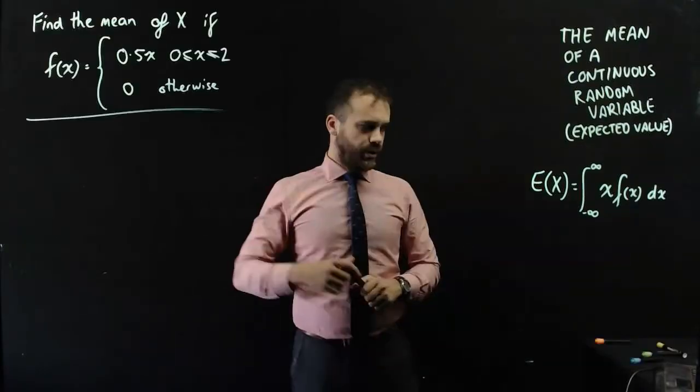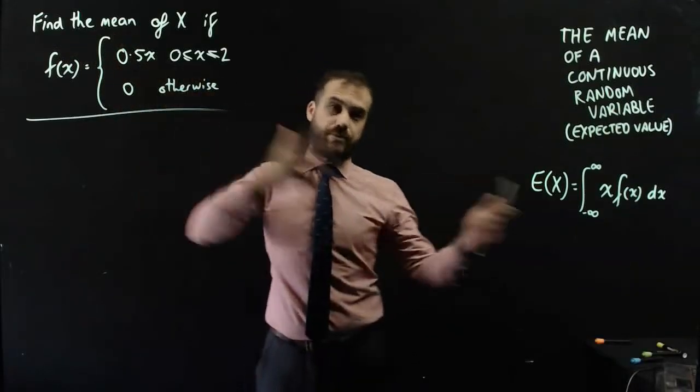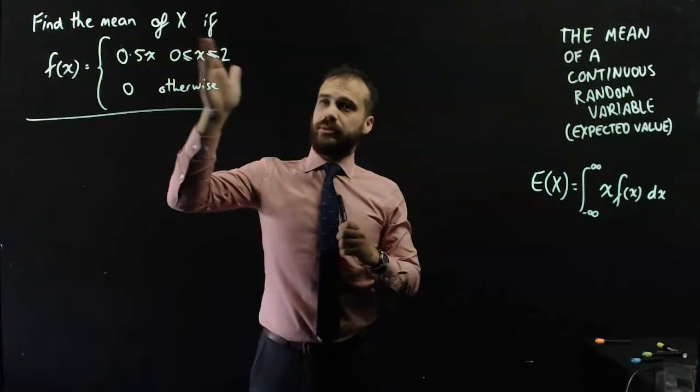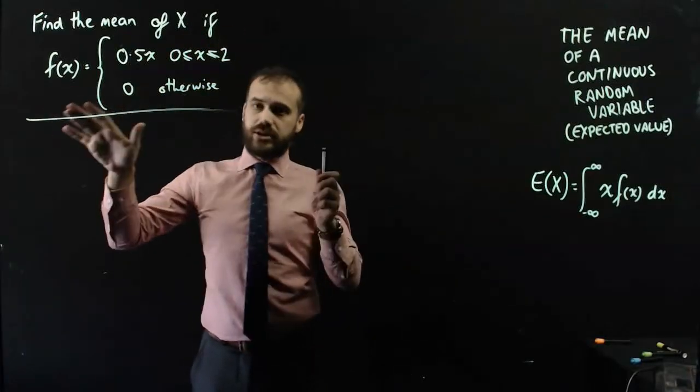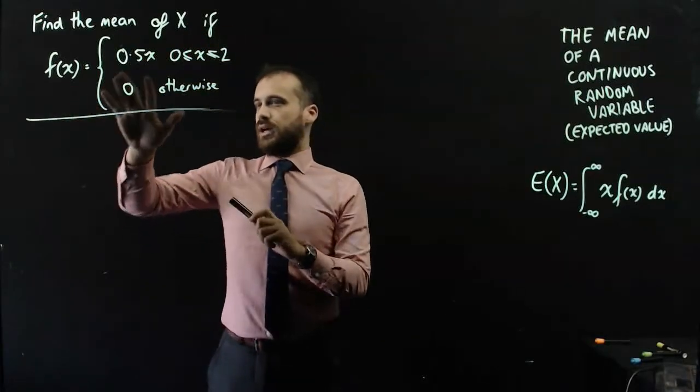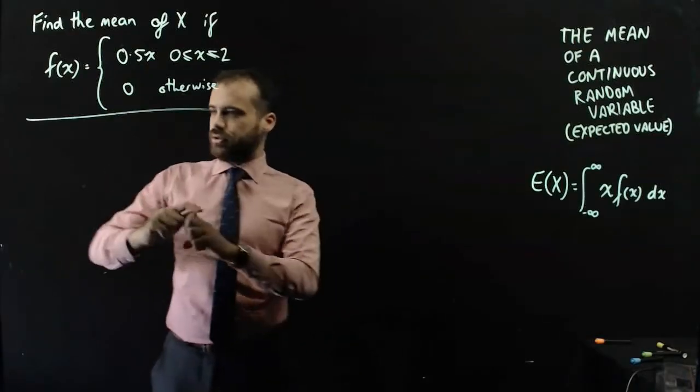Let's just try it. So the question is, find the mean or expected value, they're the same thing, of the random variable x if it's given by this probability density function. So relatively straightforward, let's write it all down.